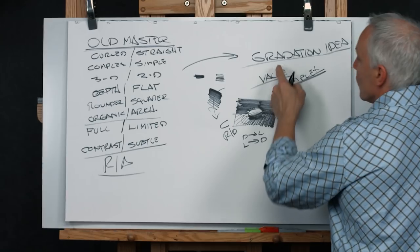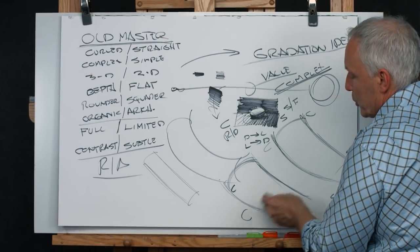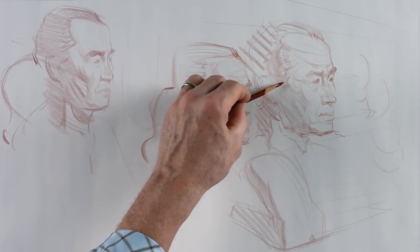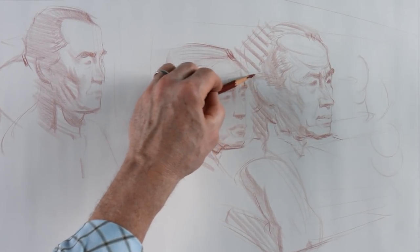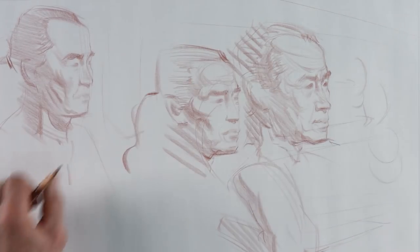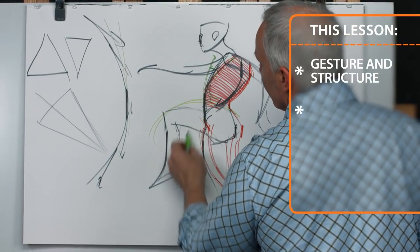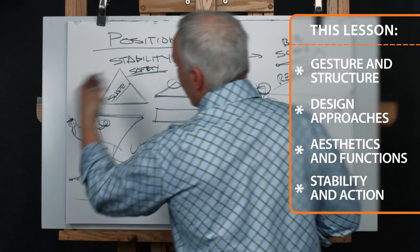In this lesson on advanced shape design, we're going to take a look at the head and see how to take it to the next level. We've got our basic information — we understand the laws of light, how the landscape of the head supports those all-important details called the features. Now we're going to figure out how to make it not only more interesting and more beautiful, but more importantly, more personal — how we can start to make these things our own.